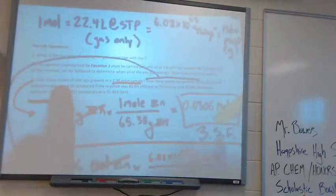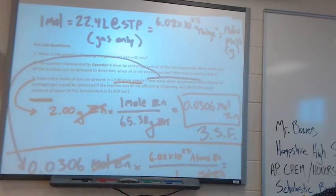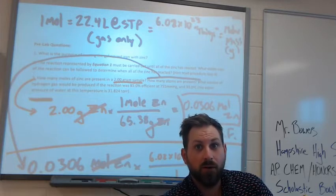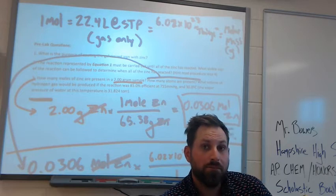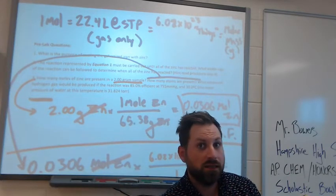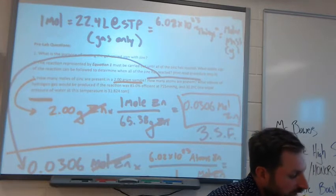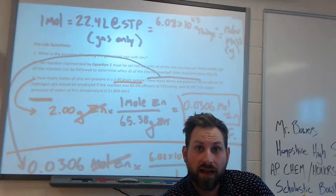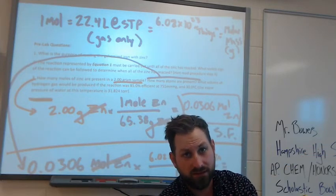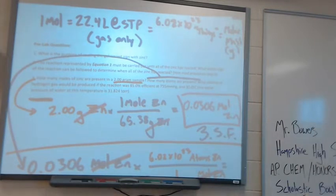This is our last pre-lab question. How many moles of zinc are present in a two gram sample? How many atoms are present? When you're thinking about writing up your conclusion, you're not just talking about the results you got from your lab. You're talking about the data and what it means. So in your conclusion, you should be writing about how to convert between units and maybe discuss this particular problem where we're looking at using the ideal gas law.